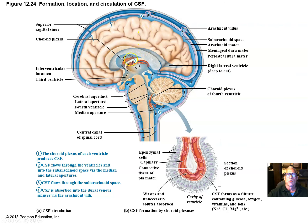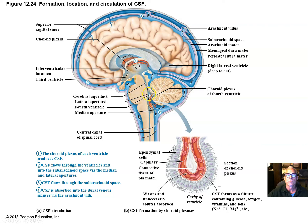The cerebrospinal fluid is produced by the choroid plexus — a dense array of capillary loops surrounded by ependymal cells. Fluid from the capillaries is modified by the ependymal cells and secreted into the third ventricle. The fluid then travels down through the cerebral aqueduct to the fourth ventricle, and from there through the central canal of the spinal cord into the surrounding subarachnoid space.